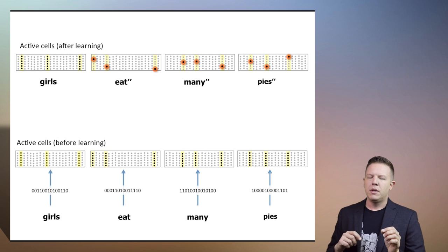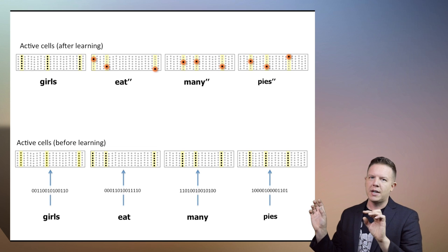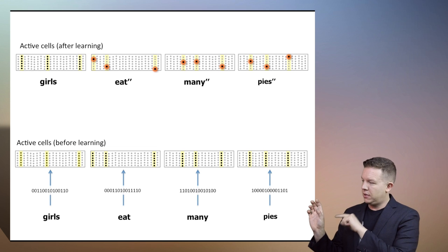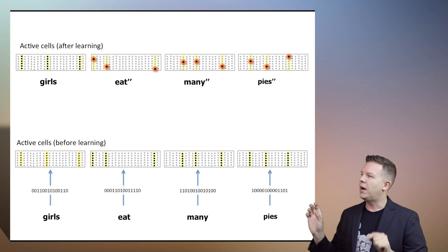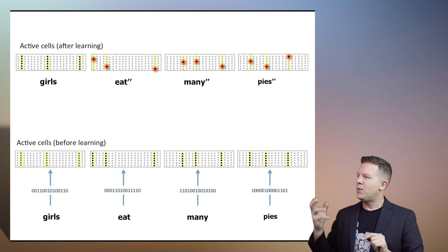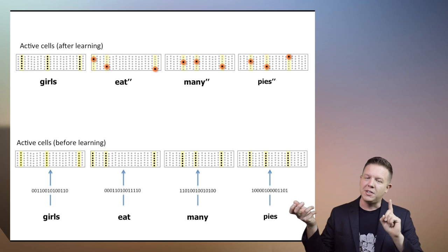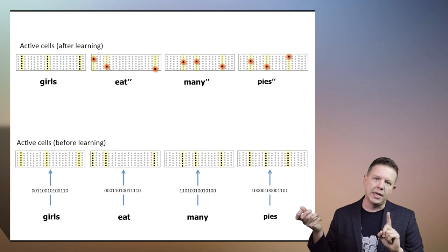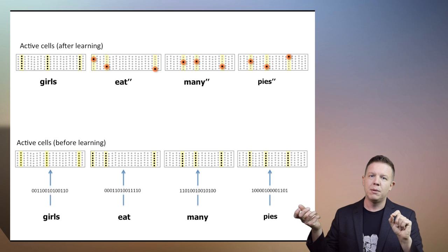After learning, when we go and see what cells activate for this temporal pattern — girls eat many pies — we see that we have 'eat double prime,' which is a different representation than we had when we said boys eat, which was 'eat prime.'